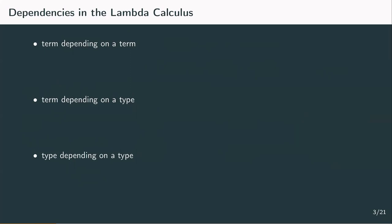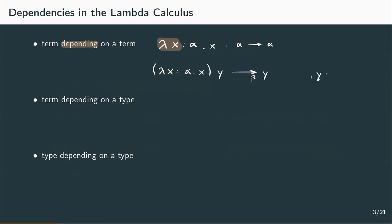In the term-term dependency, we start with a term x of type alpha. We can introduce an abstraction: lambda x of type alpha dot x, which has type alpha to alpha. The term lambda x of type alpha dot x depends on the term x because we can't know the actual value of the whole term until we put a concrete instance for x. If we apply that term to something of type alpha, say a variable y, we get a beta reduction which yields y, again of type alpha. The actual value of the application depends on the term x in the abstraction.